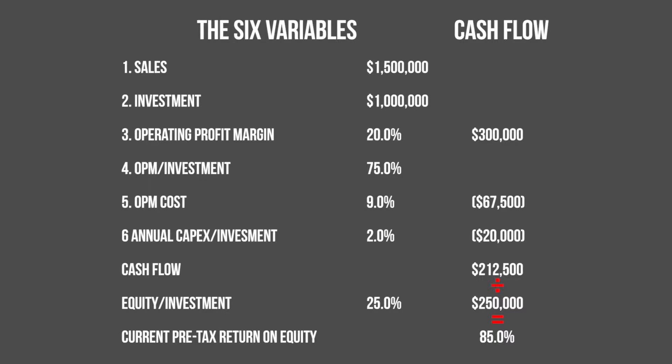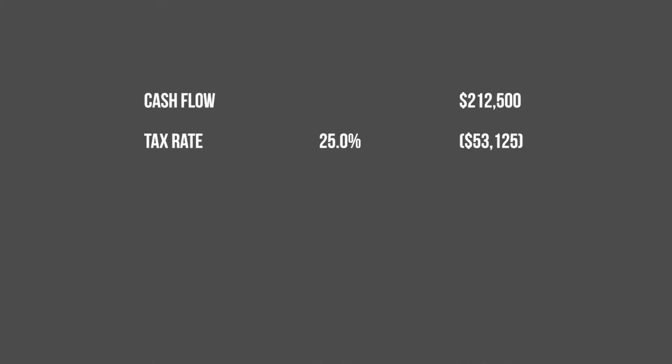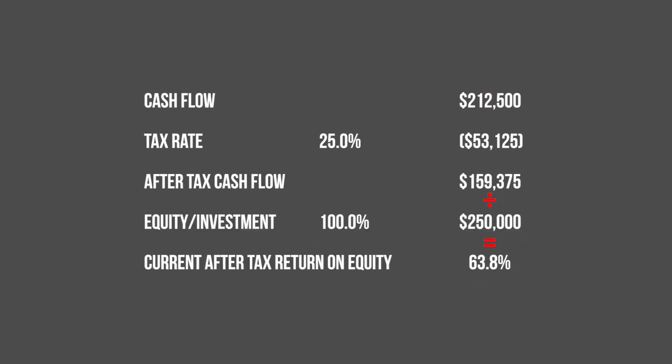Were we investing in a company that pays taxes, and were we to use an effective tax rate of 25%, the investor after-tax cash flow would fall to $159,375. And the after-tax return would likewise fall to 63.8%.